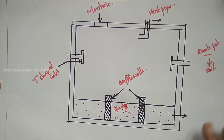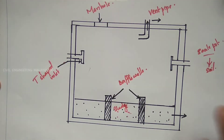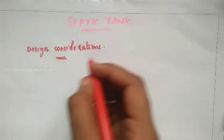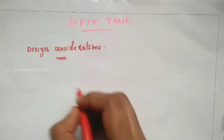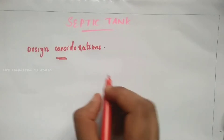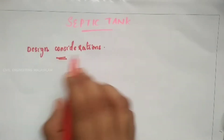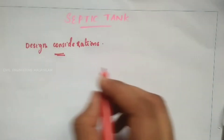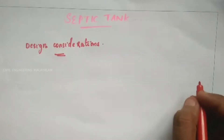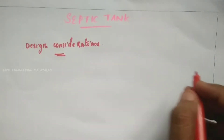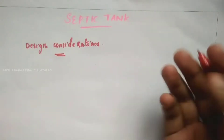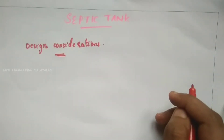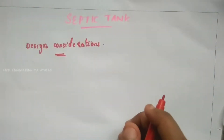So, this is the main part of the septic tank. Now we will look at the design considerations. This is an important item in Module 5. We need to examine the design of the septic tank and assume all the relevant values.